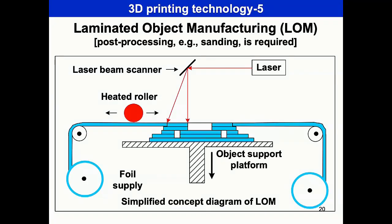Laminated Object Manufacturing (LOM) is another technique - one key difference from the other technologies is that it requires some post-processing, particularly sanding, once you get the structure. The concept uses a foil supply fed through a heated roller which bonds the material. A laser governed by the CAD model cuts each layer; the platform goes down and you obtain your structure level by level.